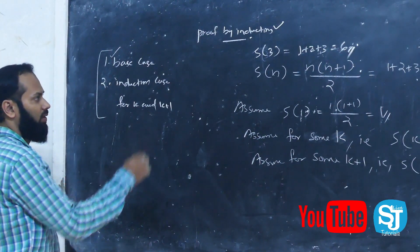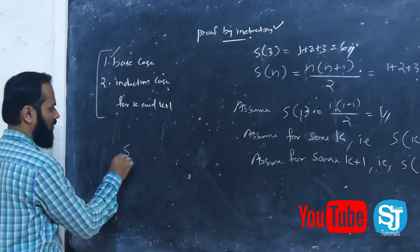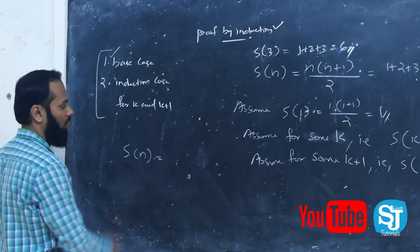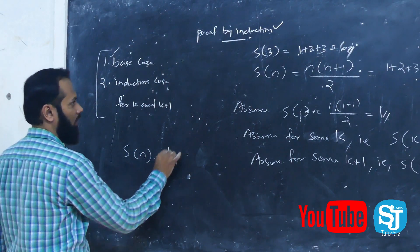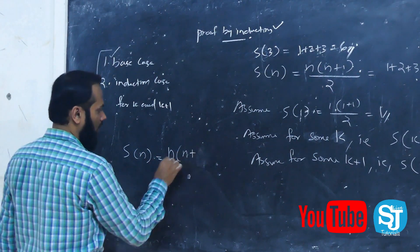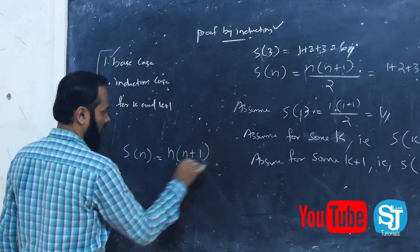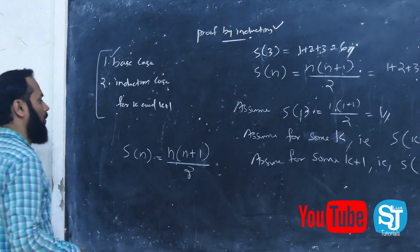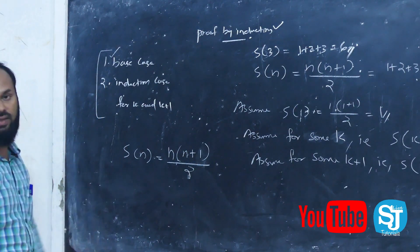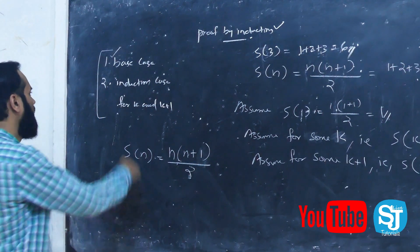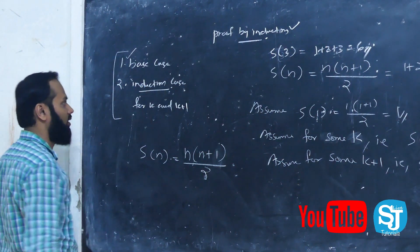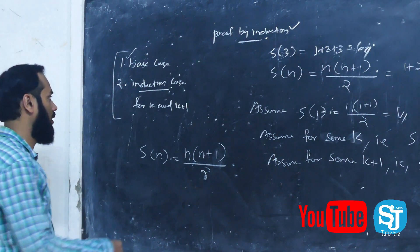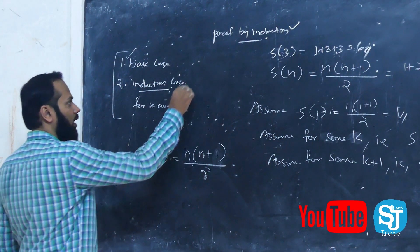In this example, we have the base case: S of n is equal to n into n plus 1 by 2. This is the base case. The second step is the induction case.